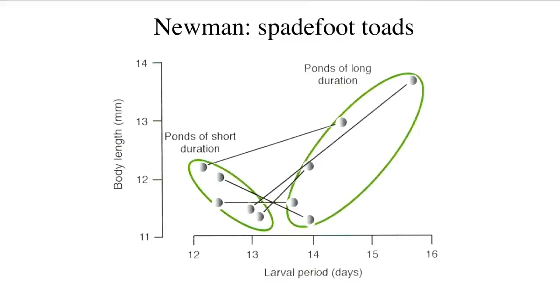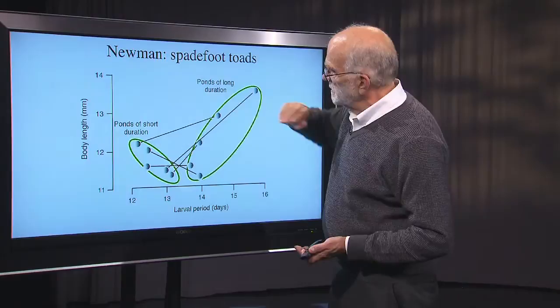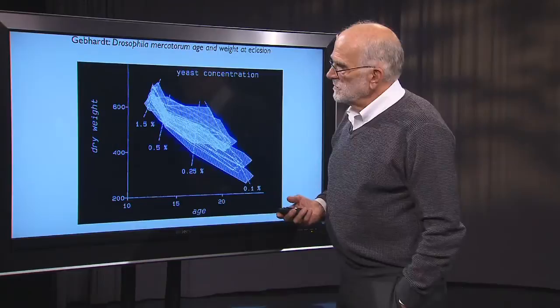Here's an example. This is the larval period — how long it takes tadpoles to develop for spadefoot toads — plotted against body length when they come out of the pond. In short-lived ponds the relationship is negative, and in long-lived ponds the relationship is positive. The lines connect families of frogs that were divided at birth, half put into a short-lived pond and half into a long-lived pond, giving five families. There is a negative inter-family correlation in short-lived ponds and a positive inter-family correlation in long-lived ponds.